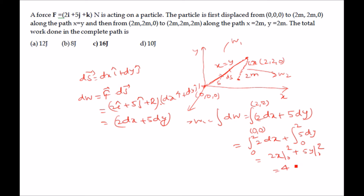This gives 4 + 10 = 14 joules, so W1 = 14 J. Now we calculate W2, the work done when the object moves from (2,2,0) to (2,2,2).